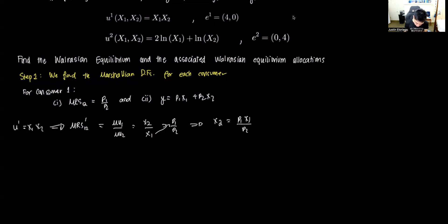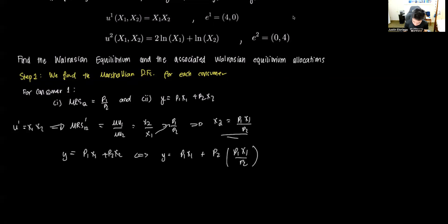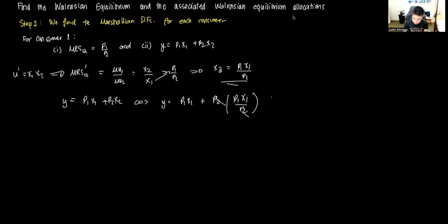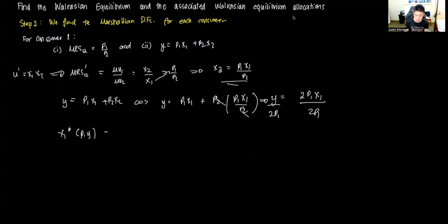We then use the second first-order condition: y equals P1·x1 plus P2·x2. Plugging in the intermediate value, y equals P1·x1 plus P2 times (P1·x1 / P2). The P2 terms cancel, giving y equals 2·P1·x1. Dividing both sides by 2P1, we get the Marshallian demand for good one: x1*(P,y) = y / (2P1).